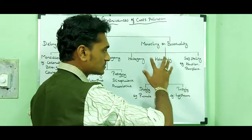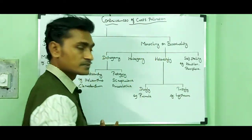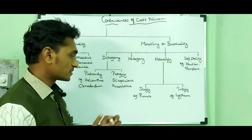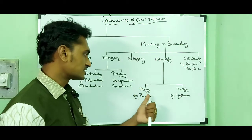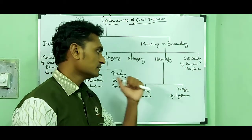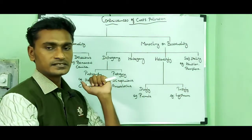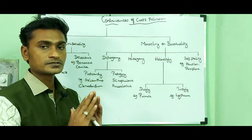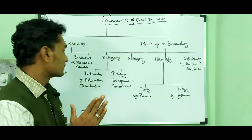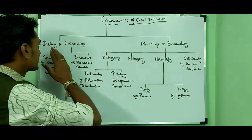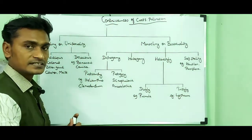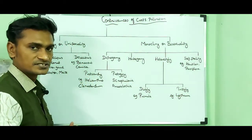Heterostyly also has two types: Distyly and Tristyly. Now, I am going to tell you about Dicliny or unisexuality and its definition.